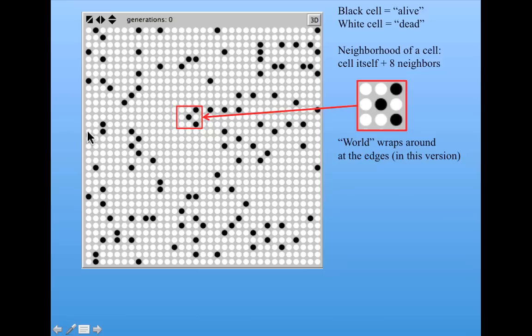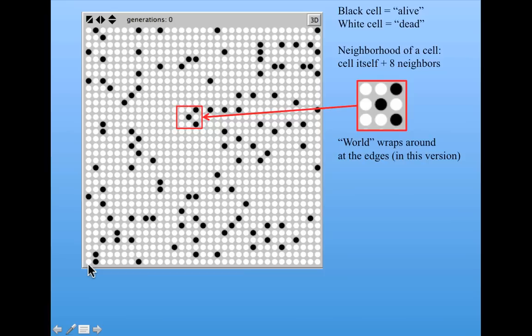So, for example, if I look at this cell that's on the edge, its left neighbor is the cell way over here, on the right. Or if I look at the cell right here, its neighbor to the south is this cell, right up at the top. So, the sides and the bottom and the top wrap around.